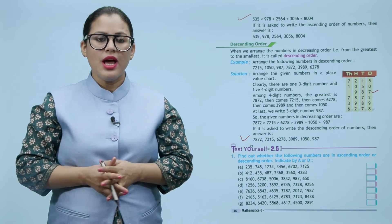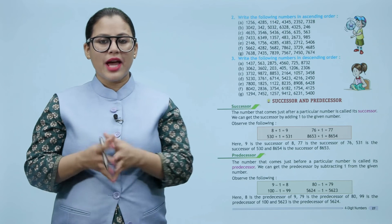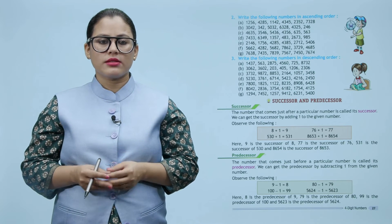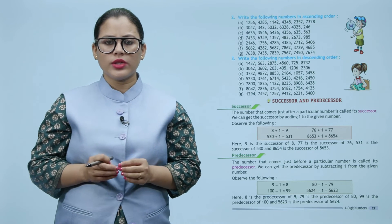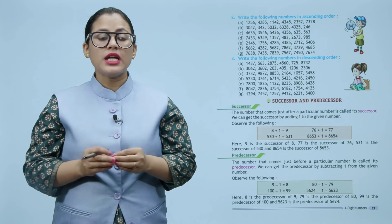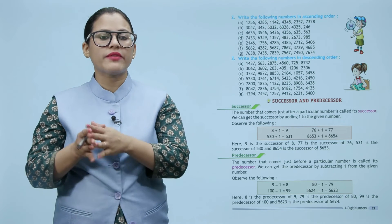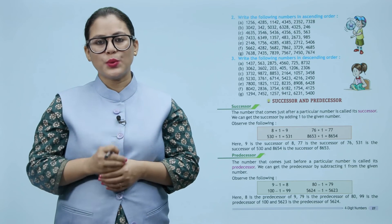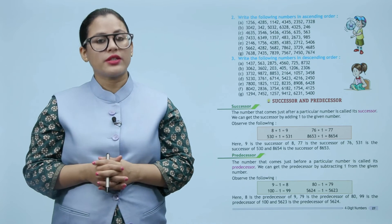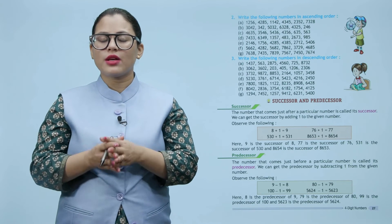I hope you have understood ascending and descending order. Now is ki practice khud se karenge. Successor and predecessor. Successor: the number that comes just after a particular number is called its successor. We can get the successor by adding one to the given number. For example: 8 plus 1 equals 9, 530 plus 1 equals 531, 76 plus 1 equals 77, and 8653 plus 1 equals 8654. Here, 9 is the successor of 8, 77 is the successor of 76, 531 is the successor of 530, and 8654 is the successor of 8653.